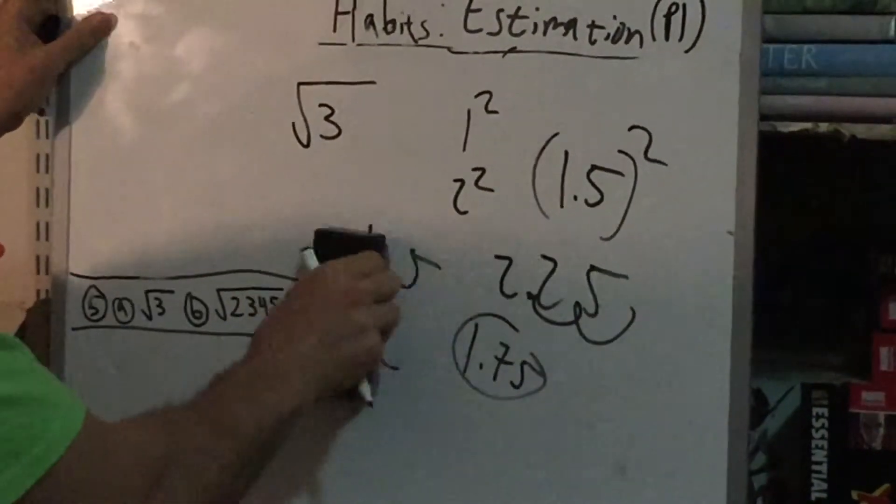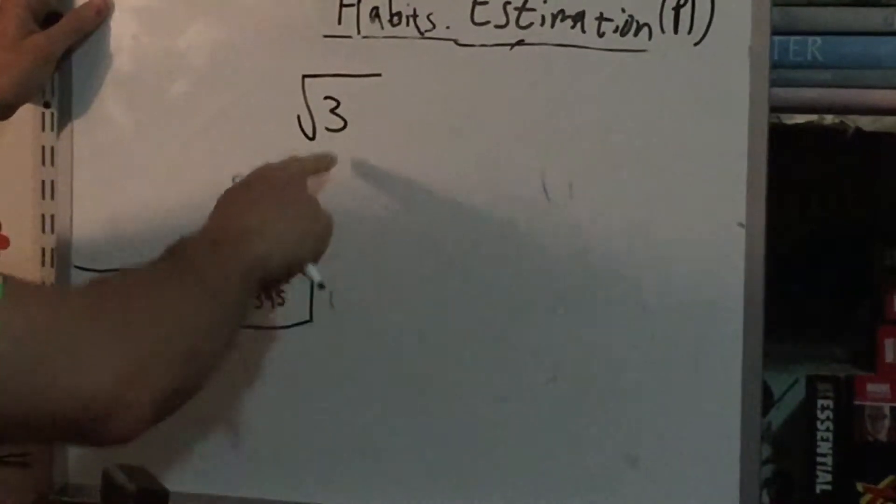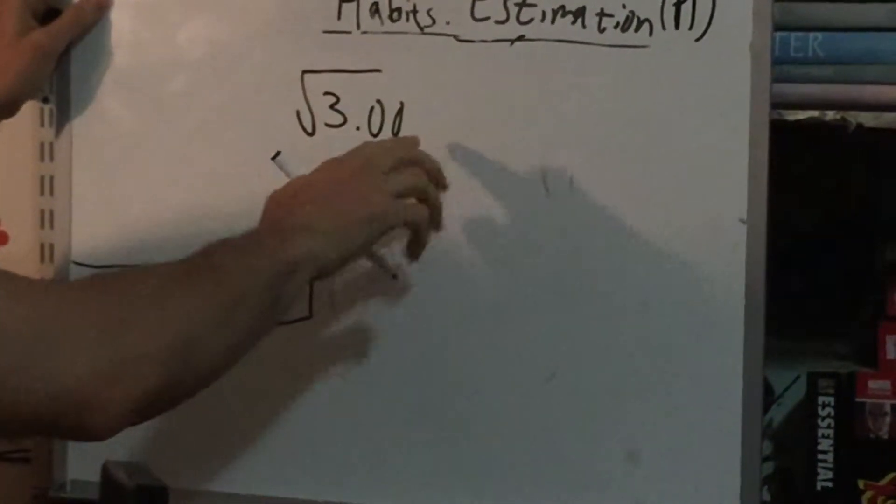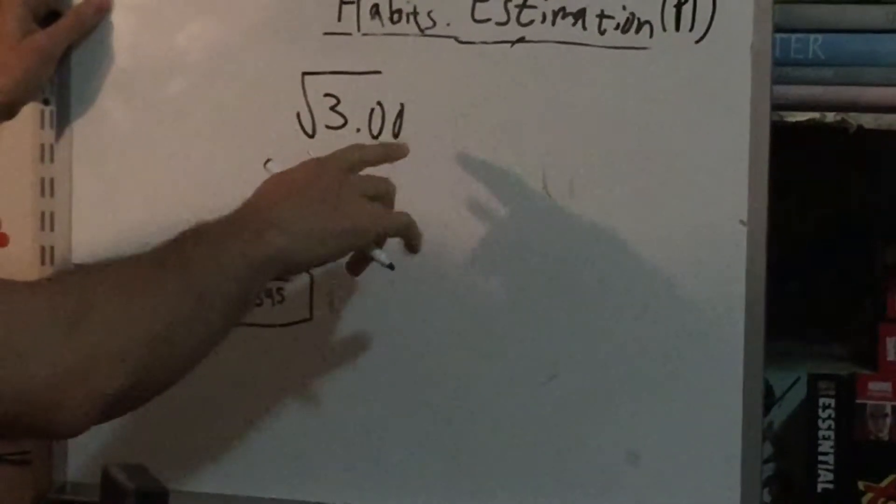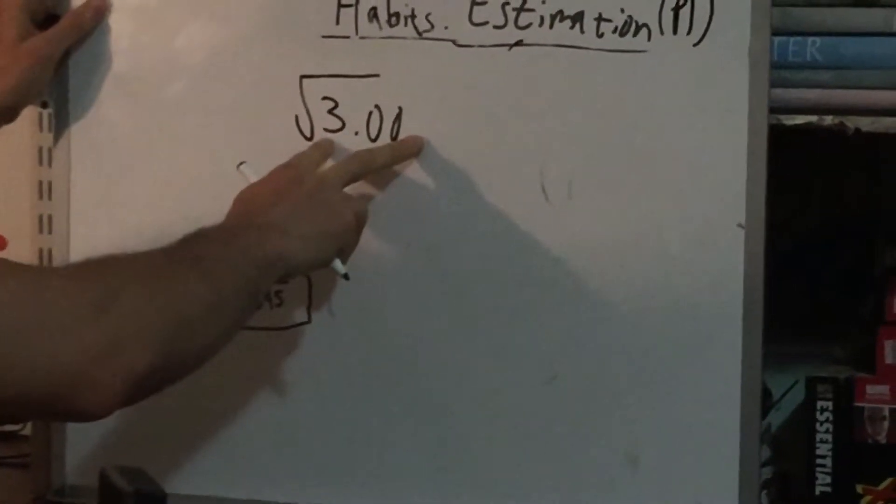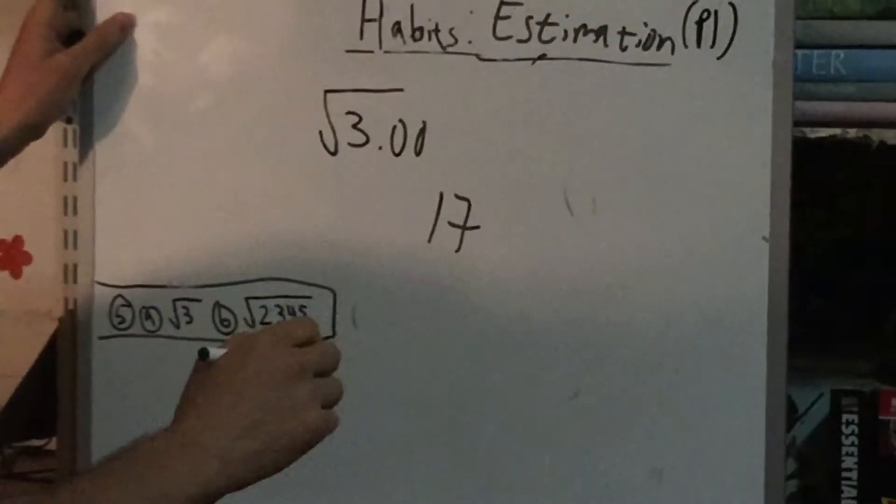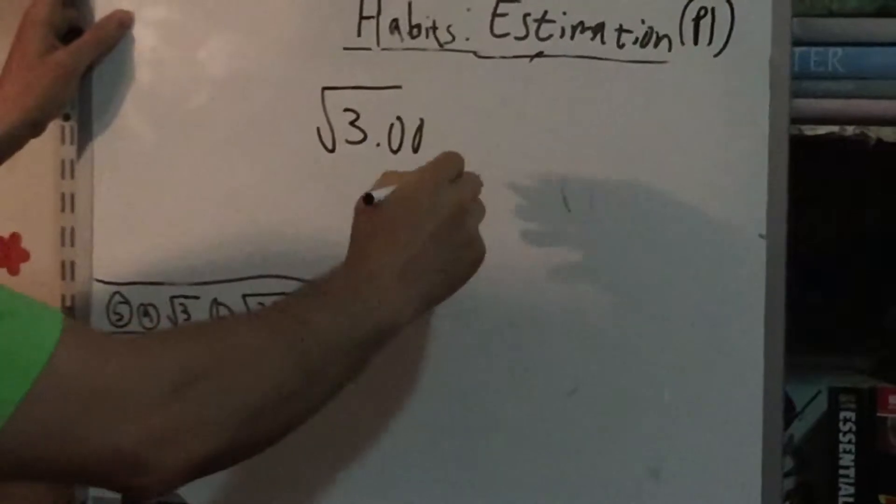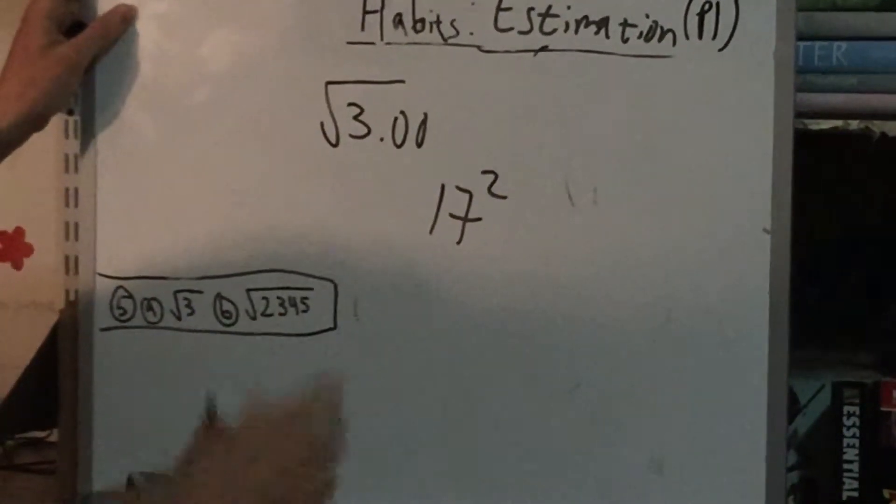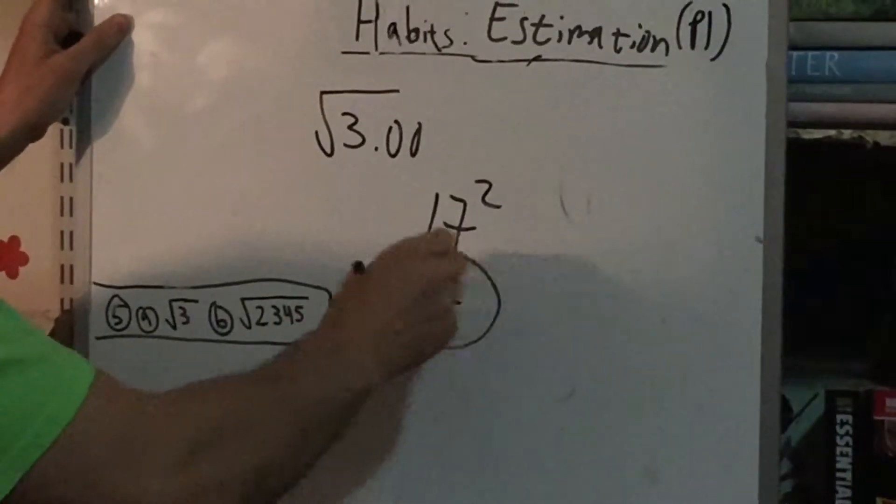Another way is by treating this 3 as a 300. Now, I know I wrote 3.00, but think of it as 300. And if you think, what perfect square do we know that's close to 300? Some of you, or a lot of you hopefully know it's 289, which is 17 squared. So that tells us this is pretty close to 1.7 squared.